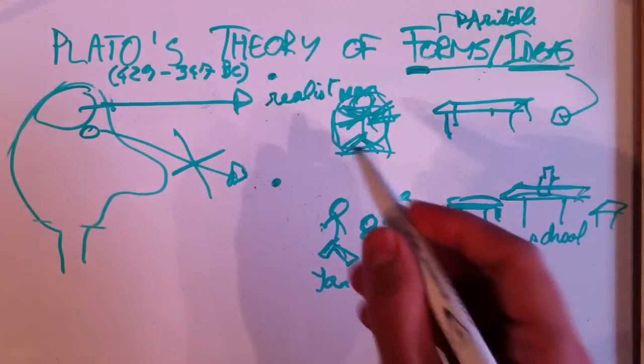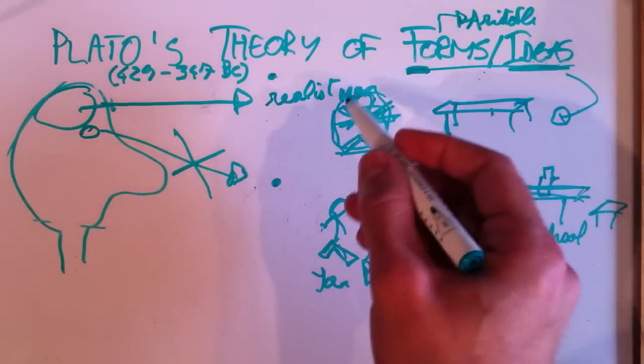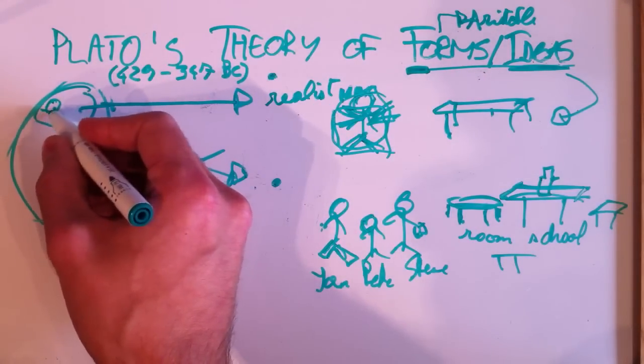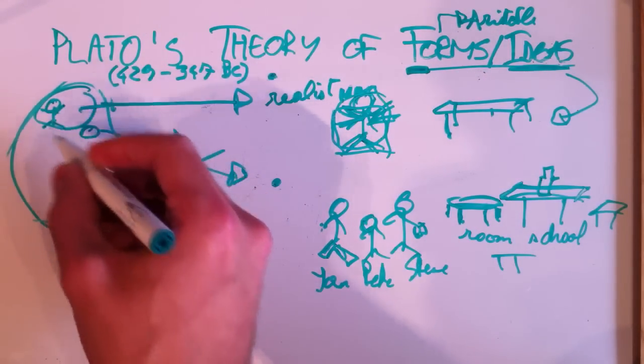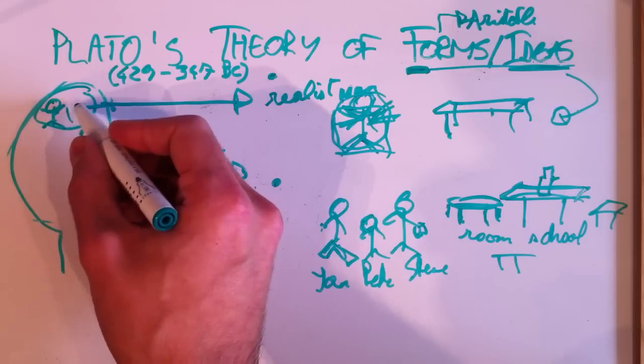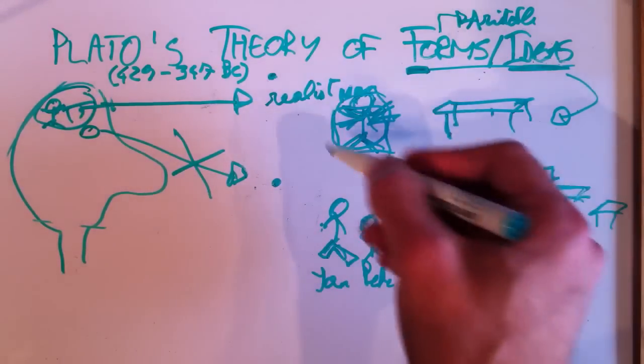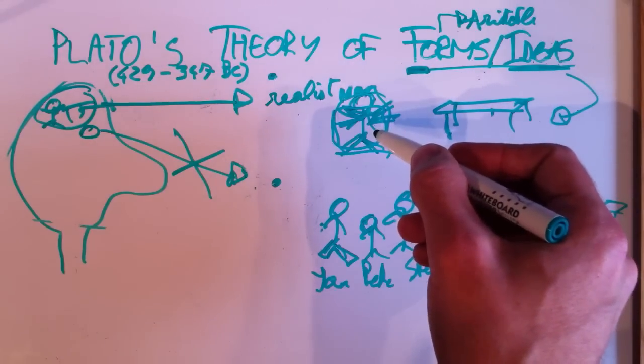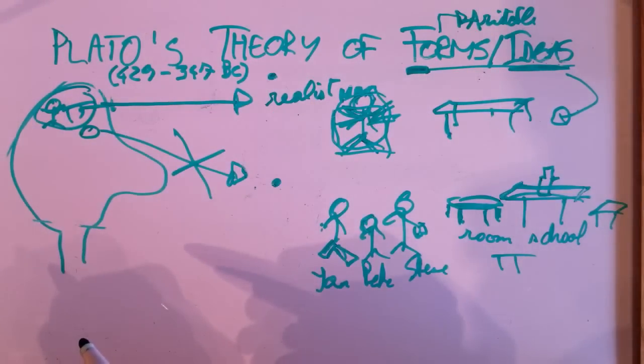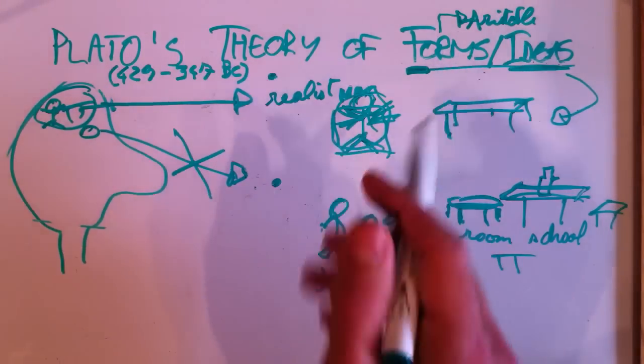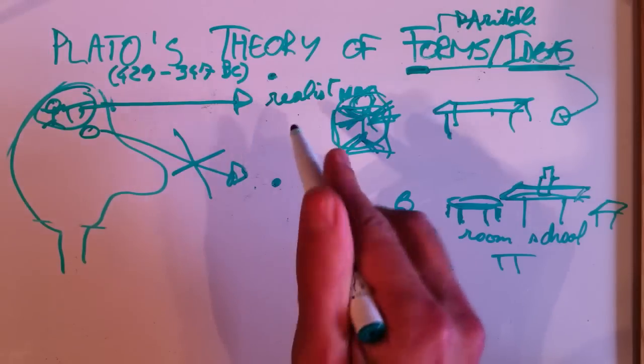He's a realist about universals. So he does not just believe that we have this idea of what man looks like. We have this idea about what tables or what a table in general is. No, he means that it really exists independent from our thinking. Even if we're not thinking about man or about table, it is still out there. So he's a realist.